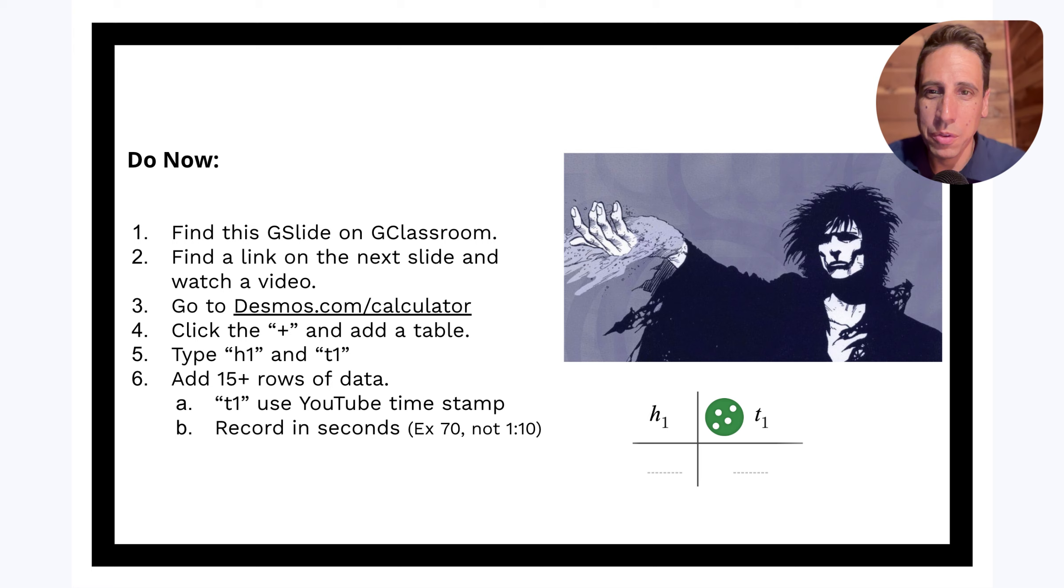Then I want you to go to desmos.com slash calculator, where you can click on this link, and click the plus and add a table. Like, you know how to do, just like in the Strobe Parabola project. Then on the top of the table, you can do H1 and T1, that's height and time. I want you to add 15 rows of data. Watching the video, pull out 15 different instances where you can firmly establish what the height is and what the time is in seconds.